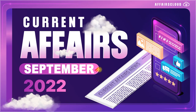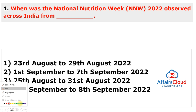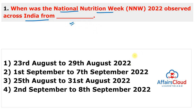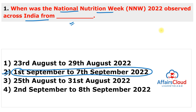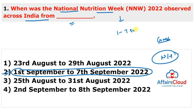Let's start the September month topic-wise current affairs. Today's topic is important days, and here is the first question: when was National Nutrition Week 2022 observed? It was observed from 1st to 7th September 2022 — the first week of September — to create awareness about good nutrition, health, and healthy eating habits. The first National Nutrition Week was observed from 1st to 7th September 1982 when Indira Gandhi was Prime Minister. The theme was 'World of Flavors.'